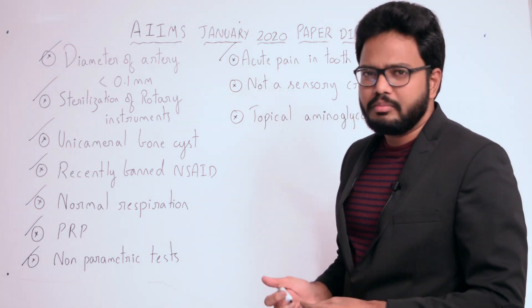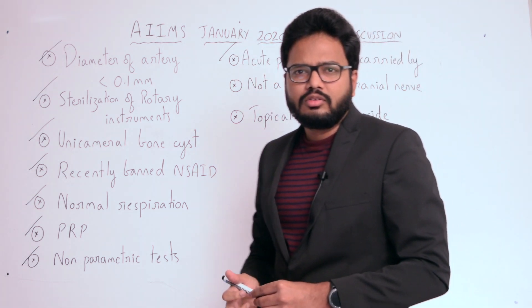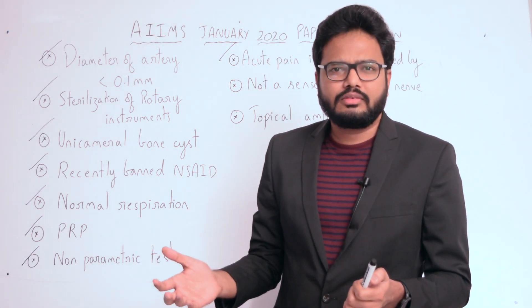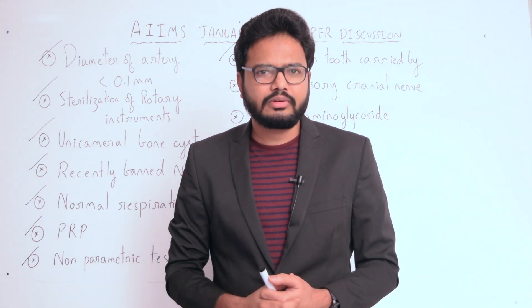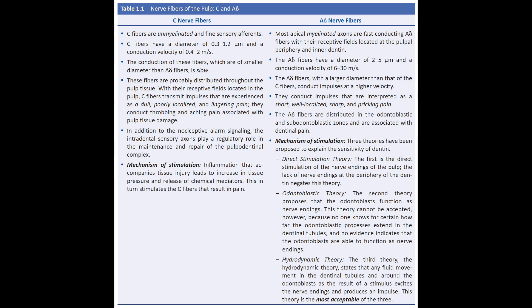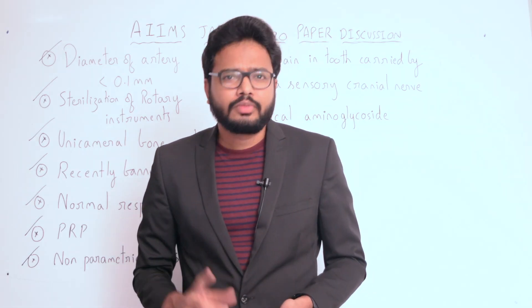Acute pain in a tooth is carried by A-delta fibers, which transmit sharp, lancinating, acute-type pain. C-fibers usually carry dull, poorly localized, lingering pain, whereas A-delta fibers interpret short, well-localized, sharp, and pricking pain.